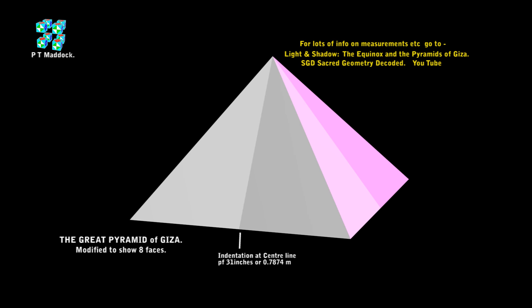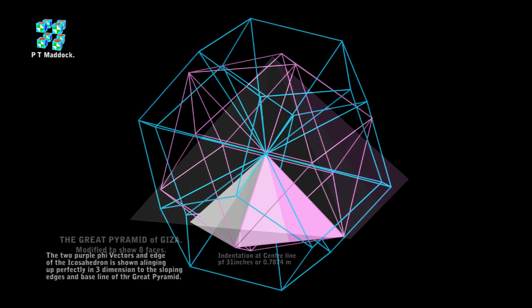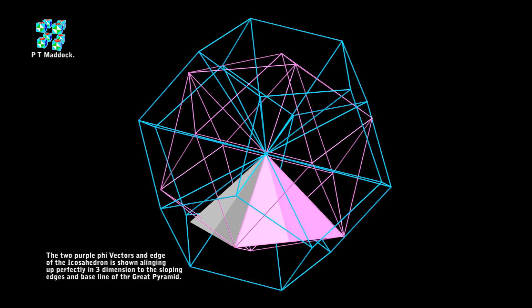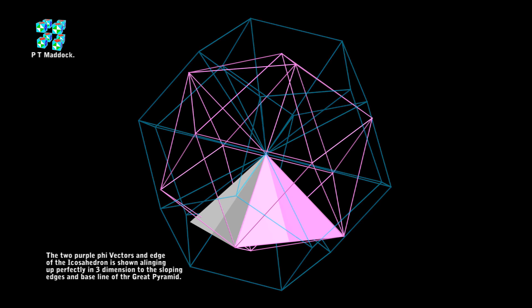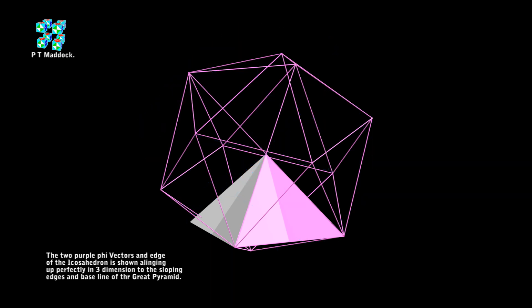Now we'll take a look at this geometry. I'm showing the Dodeca with the eight sides, and the Icoser and Dodeca outlines all around it. First of all, let's get rid of the Dodeca outlines. Now you see that we've got two vectors lining up with the pink face of the pyramid.